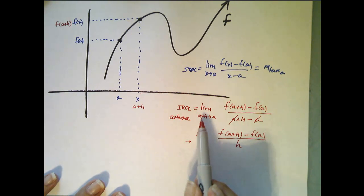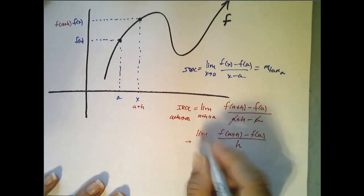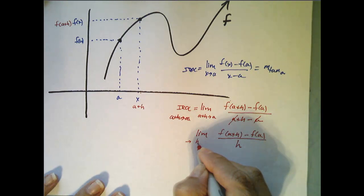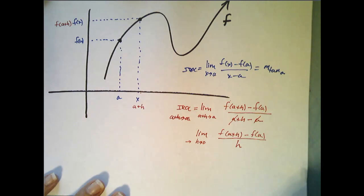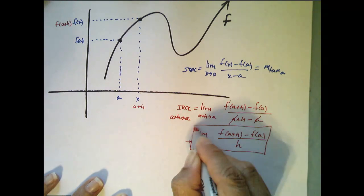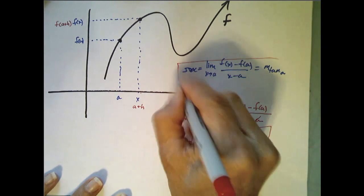And so another way to say a plus h approaches a is to say that h gets closer and closer to 0, right? Because as h gets closer to 0, a plus h gets closer to a. So as h goes to 0—this is an equivalent and alternate way to write this.